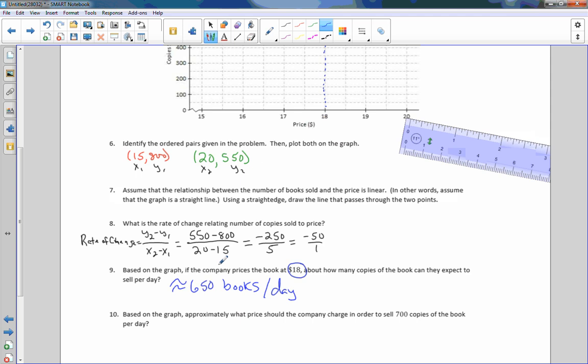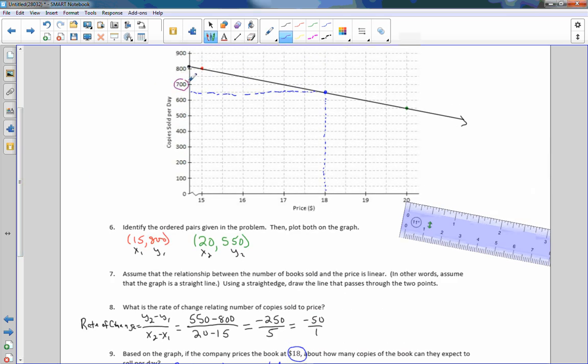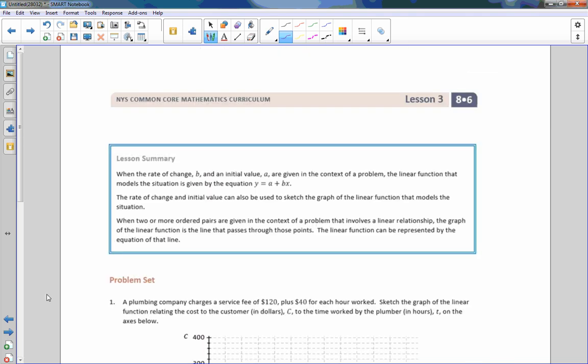Based on the graph, approximately what price should the company charge in order to sell 700 copies of the book per day? 700 is right here. In order to find out how many copies to sell, all we have to do is go over until we get to the line. It is right here, and then I look down here. The answer is $17. So approximately $17 would be the cost if they want to sell 700 books a day.